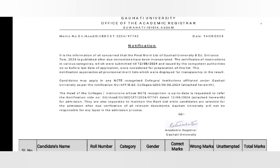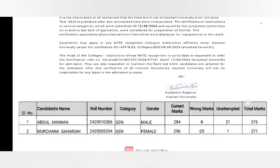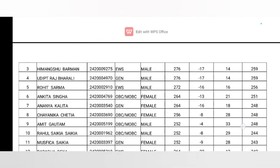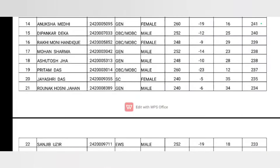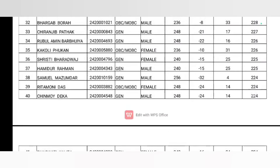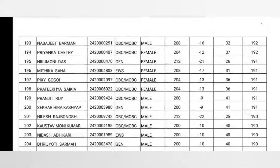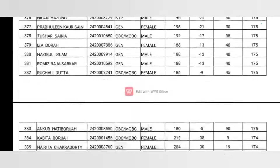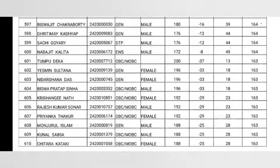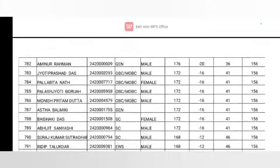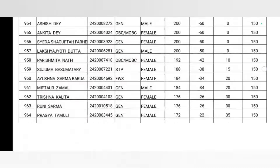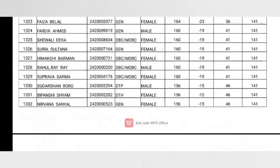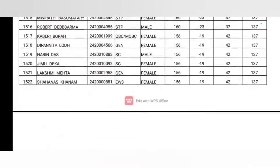We will have our final merit list showing Roll Number, Category, Gender, Correct Marks, Wrong Marks, Unattempted, and Total Marks. You can apply for these courses and for a college. If you apply for the college, you can apply for a transfer as a student, and you can choose your college.